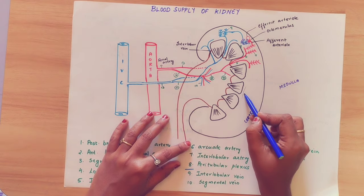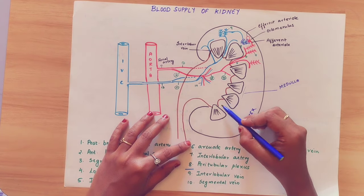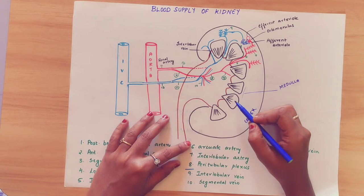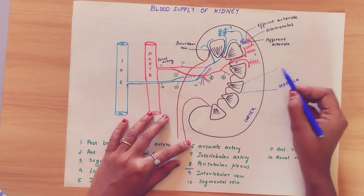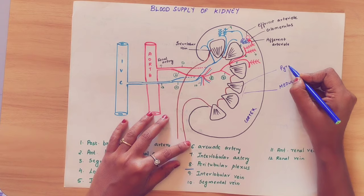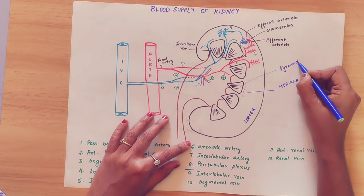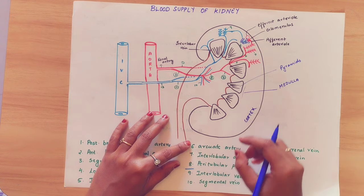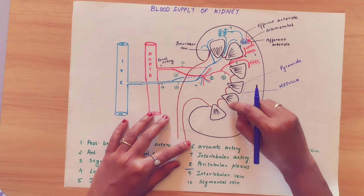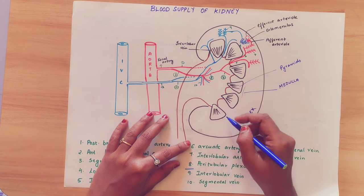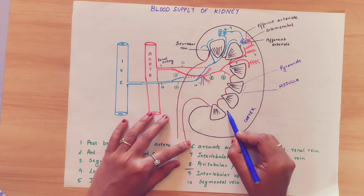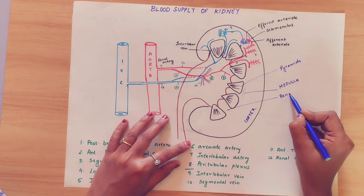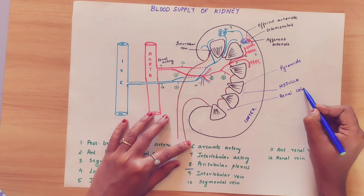This region is called the medulla. In the pyramid structure, we are calling it the pyramid of the renal medulla — these are called the pyramids. In between the pyramids, we are calling it the renal column.